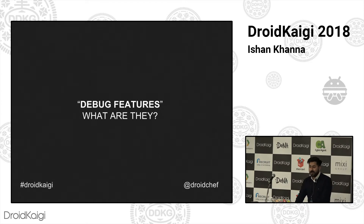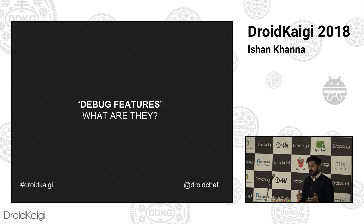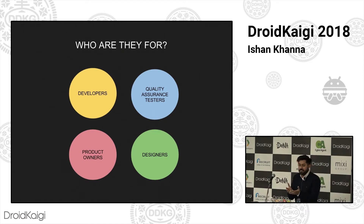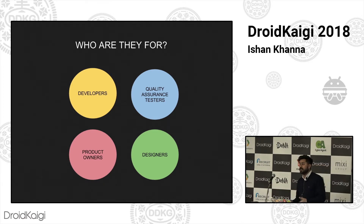Debug features — what are they? Anything that requires you to iterate over builds can be regarded as debugging, and features that prevent you from triggering those builds over and over again are called debug features. Who are they for? Developers — Android, iOS — anybody who is able to test your app, your QAs, product owners, product managers, designers, and not to forget copywriters.